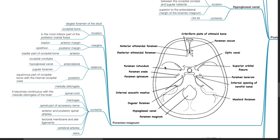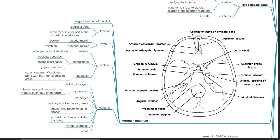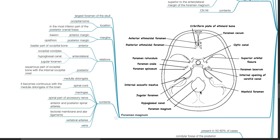The foramen magnum is the largest foramen of the skull, located in the occipital bone in the most inferior part of the posterior cranial fossa. The anterior margin is the basion; the posterior margin is the opisthion. Anterior relation is the basilar part of the occipital bone. Anterolateral relations include the occipital condyles, hypoglossal canal, and jugular foramen. Posterior relations include the squamous part of the occipital bone with the internal occipital crest. Contents include the medulla oblongata, spinal cord, meninges, spinal part of the accessory nerve, anterior and posterior spinal arteries, tectorial membrane and alar ligaments, vertebral arteries, and veins.